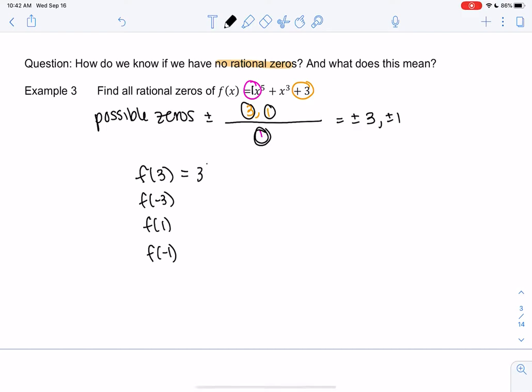So 3 to the 5th, what's that? 3 times 3 times 3, we get 27, 81. So the 5th power would be 243. Plus 3 cubed, plus 3. So I don't know what this is, but it's clearly not 0, because I just keep adding numbers.